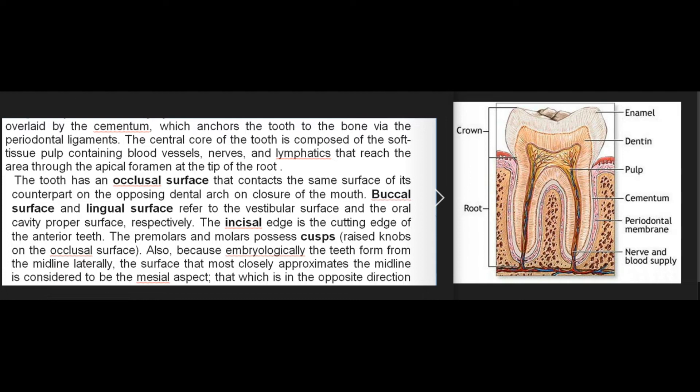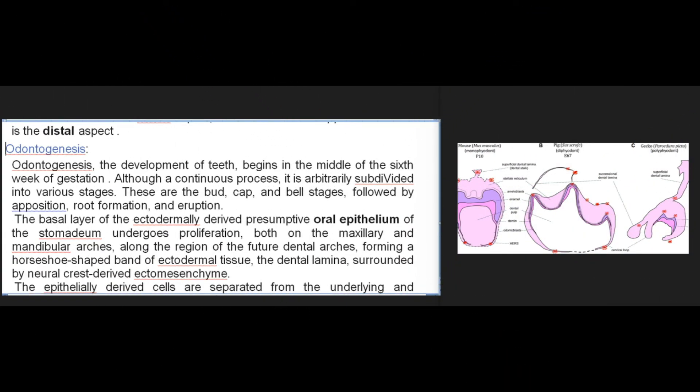The tooth has an occlusal surface that contacts the same surface of its counterpart on the opposing dental arch on closure of the mouth. Buccal surface and lingual surface refer to the vestibular surface and the oral cavity proper surface respectively. The incisal edge is the cutting edge of the anterior teeth. The premolars and molars possess cusps, raised knobs on the occlusal surface. Embryologically the teeth form from the midline laterally; the surface most closely approximating the midline is considered to be the mesial aspect, and the opposite direction is the distal aspect.